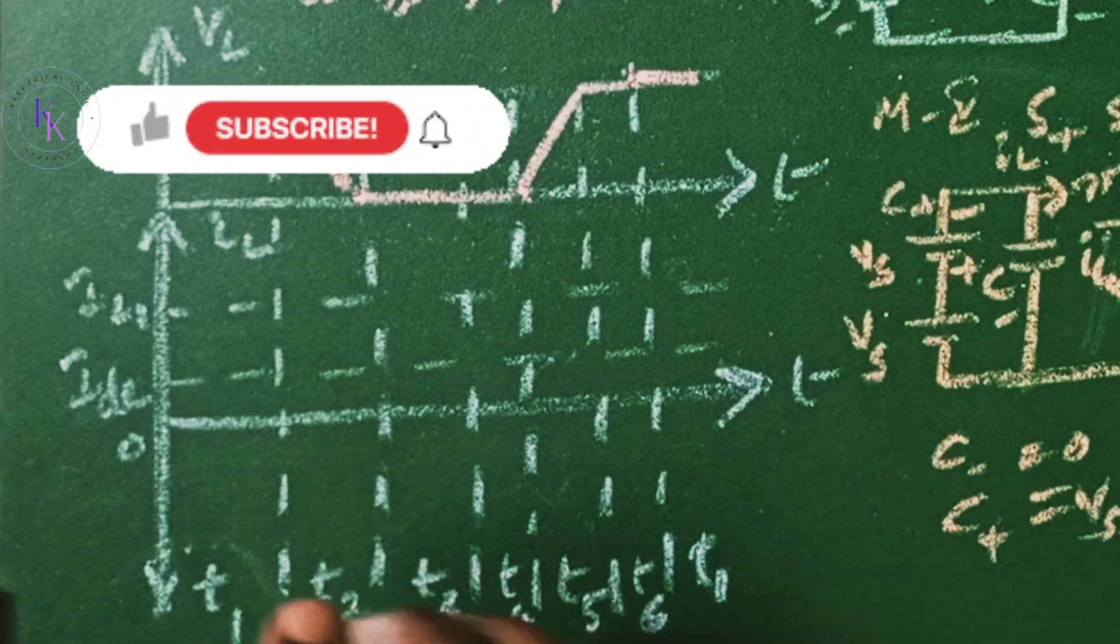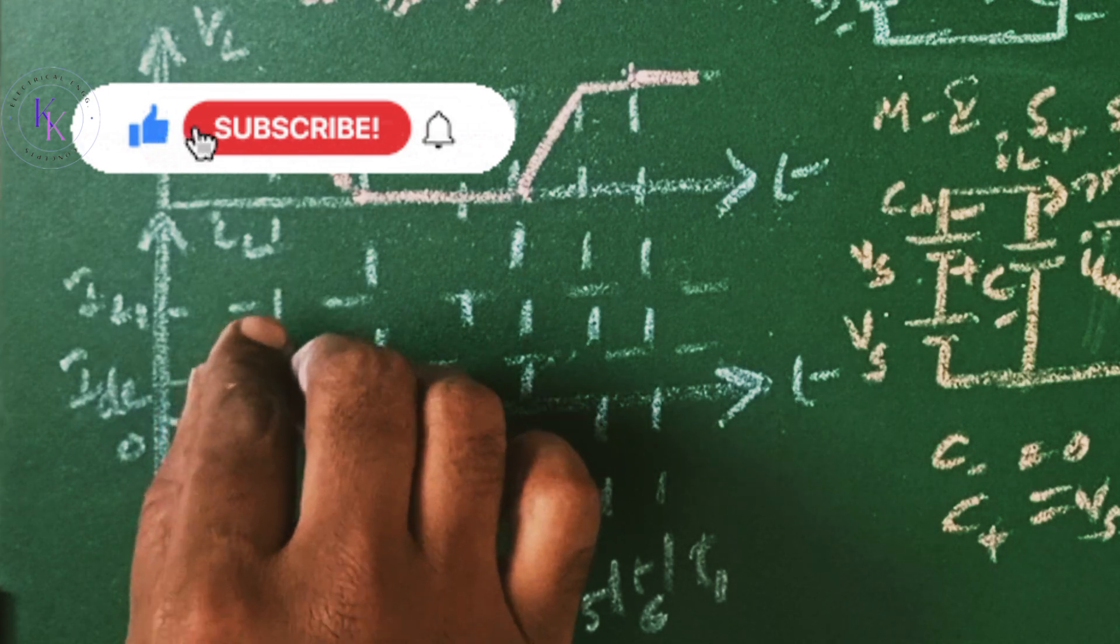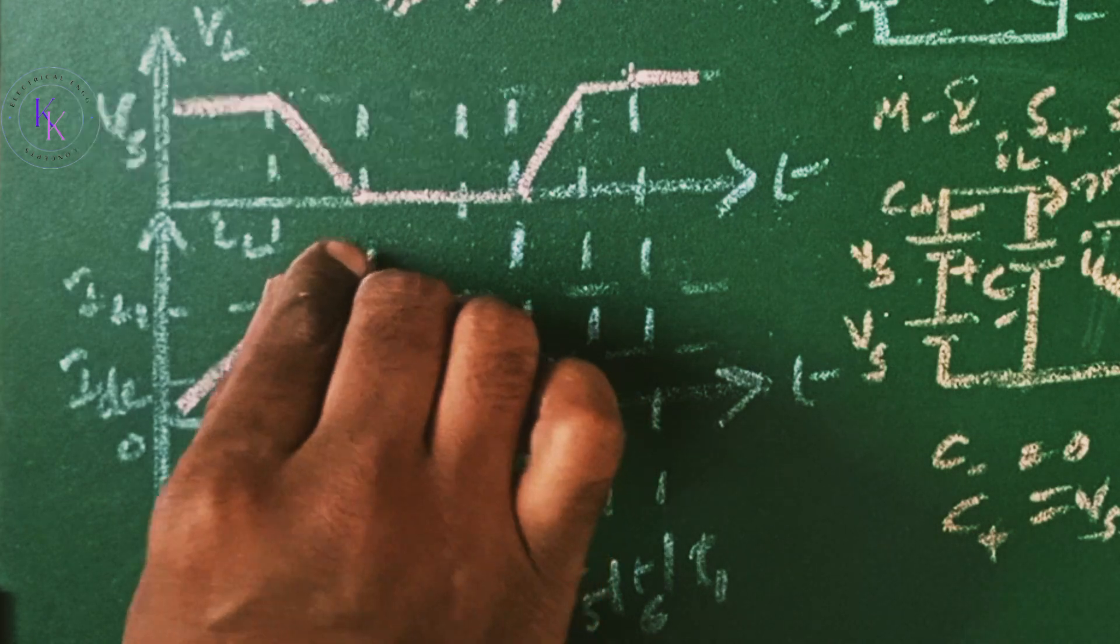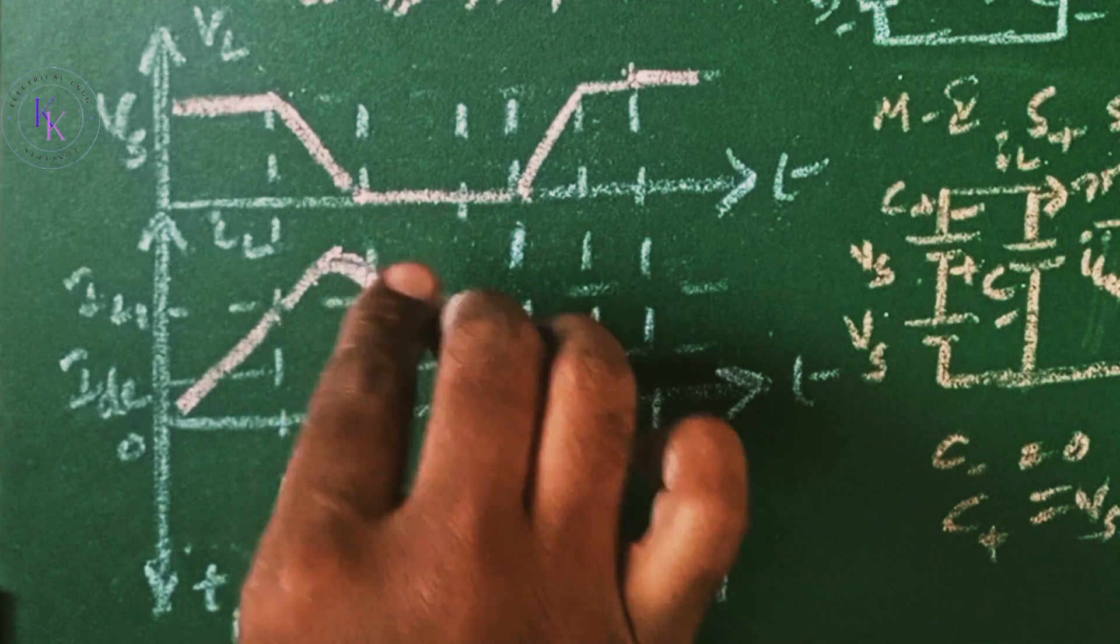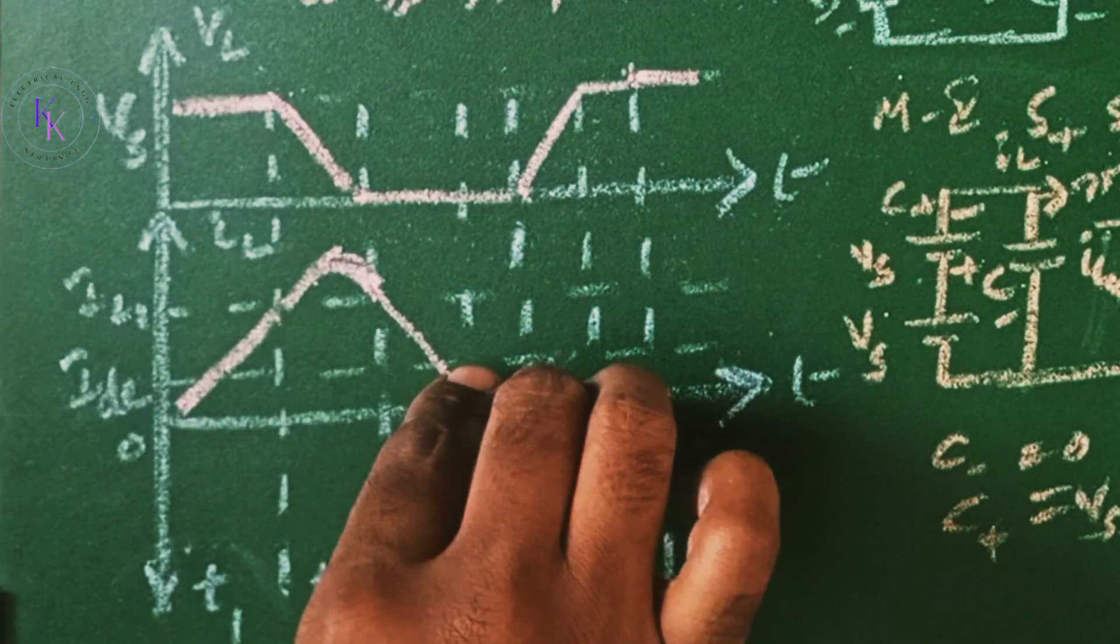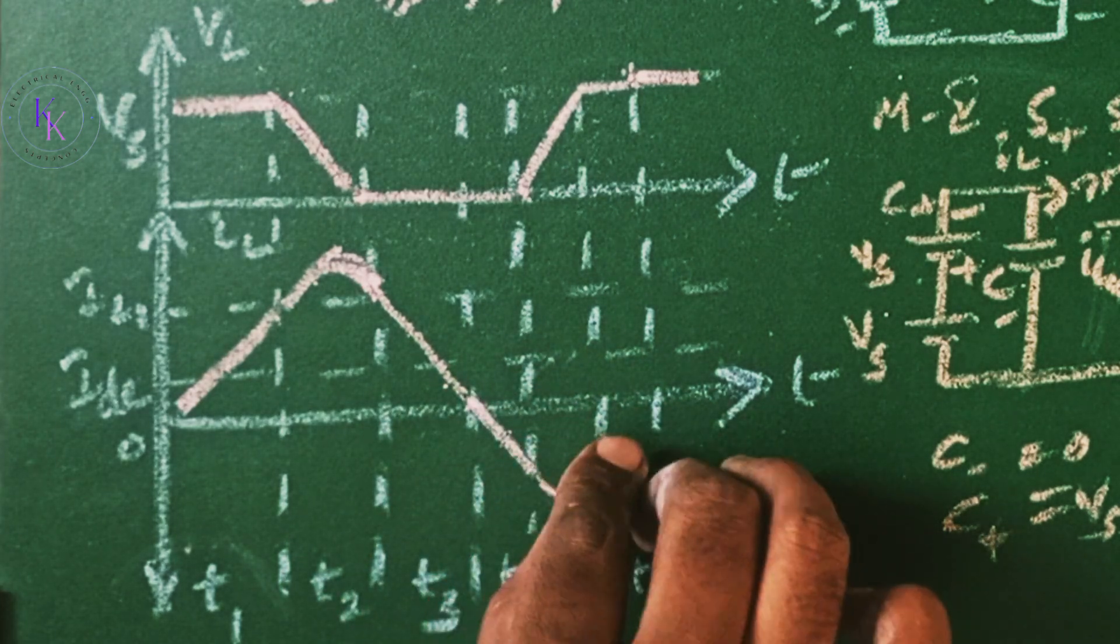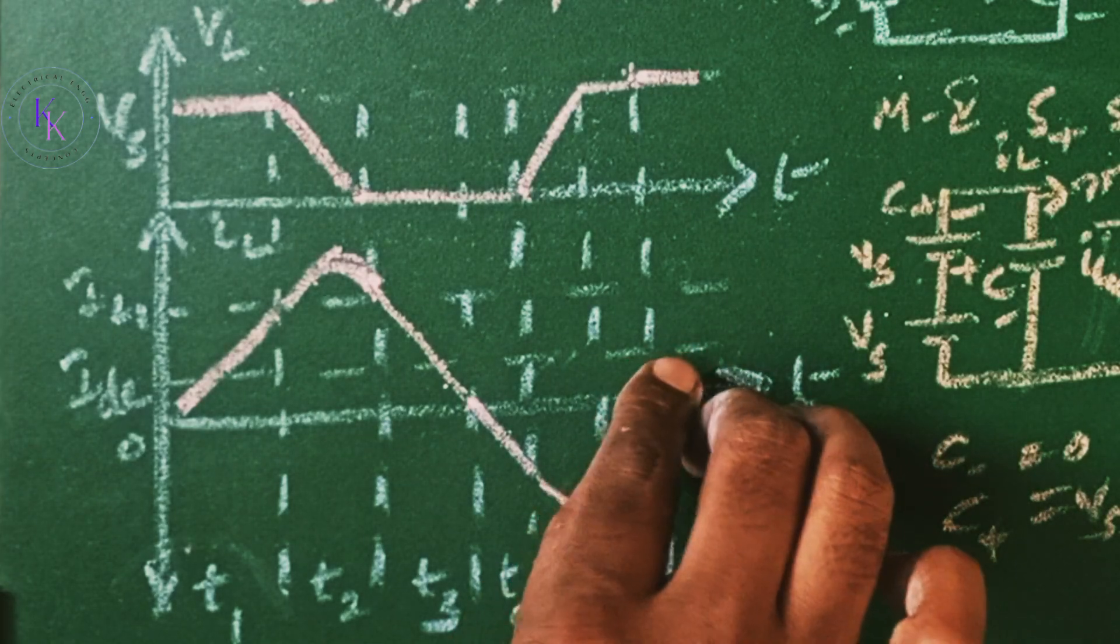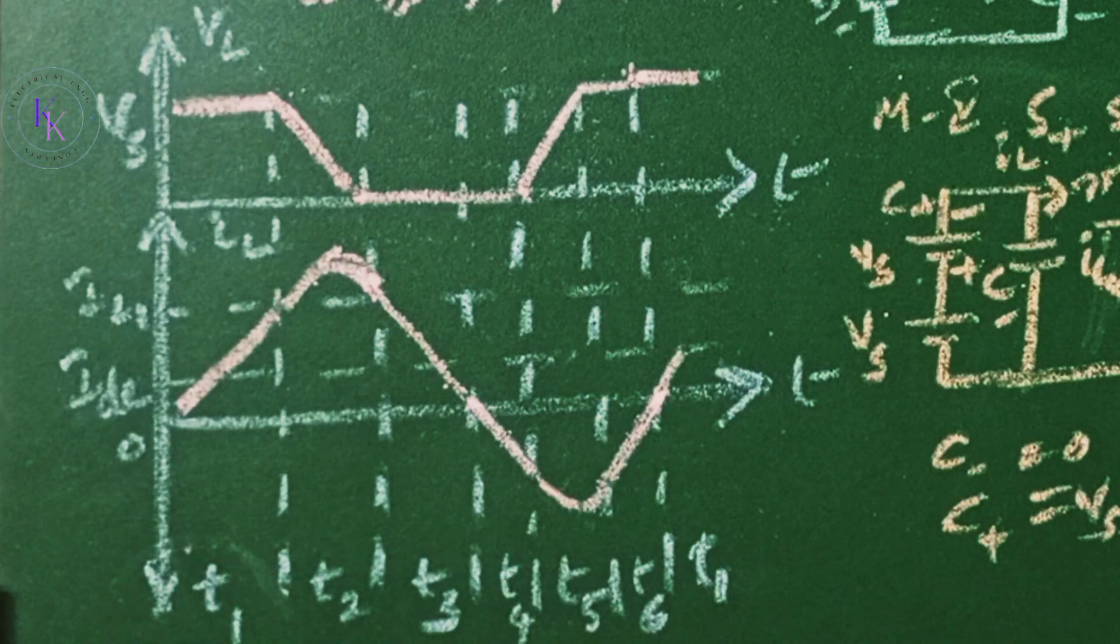Now the current is going to rise from 0 to IL1 in mode 1, and in mode 2 it reaches max and comes back to IL1, and in mode 3 it reaches to 0. And in mode 4 goes to a negative value and mode 5 still increased and decreased back and in mode 6 reaches to 0. And this cycle is going to repeat after mode 6. This is the current through the inductor IL.